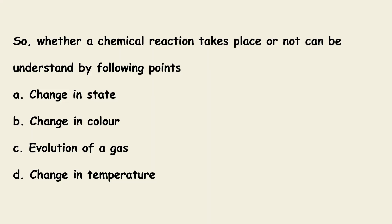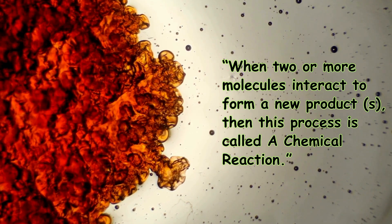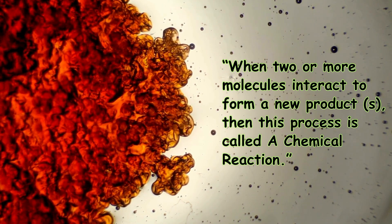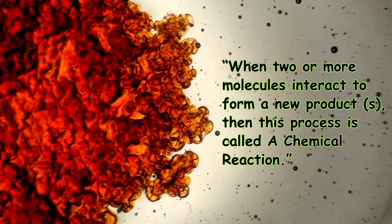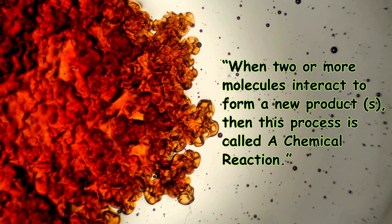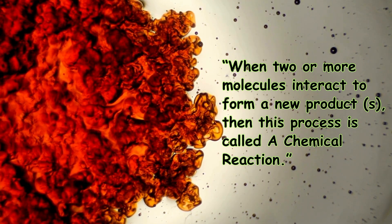Whether a chemical reaction takes place or not can be understood by the following points: change in state, change in color, evolution of a gas, or change in temperature. Therefore, on the basis of these points, we can define a chemical reaction: a chemical reaction is a process when two or more molecules interact to form a new product or products.